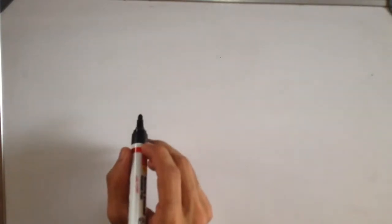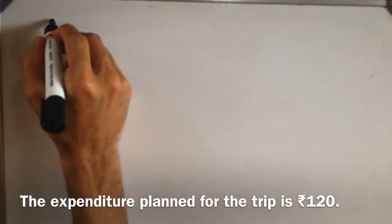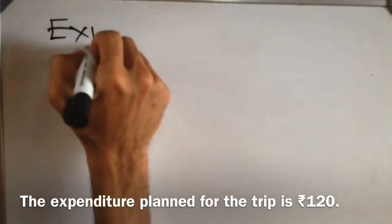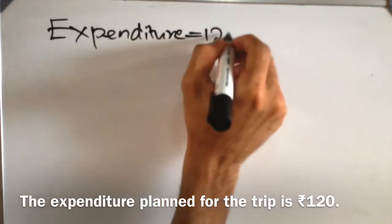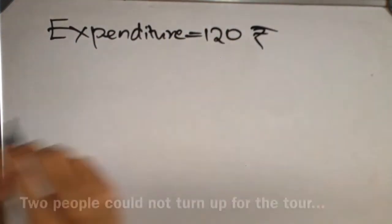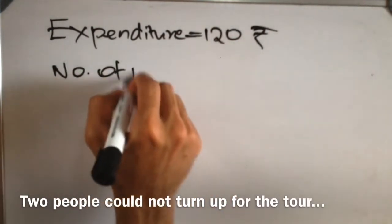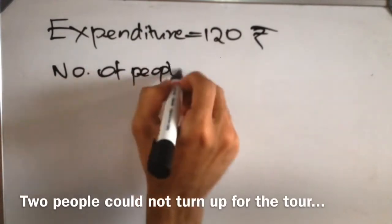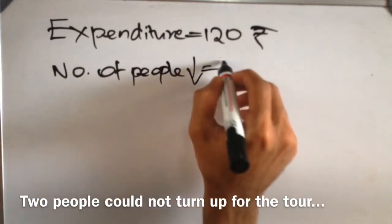Now we will do a similar question using this approach. We have a group of people plan to go on a trip, and the expenditure of the trip is equal to 120 rupees. Out of the planned number of people, two people did not turn up.